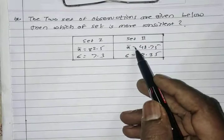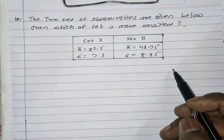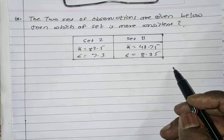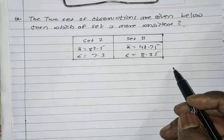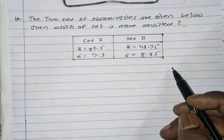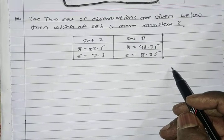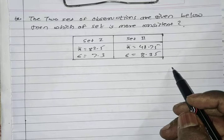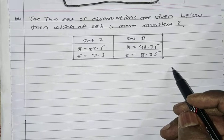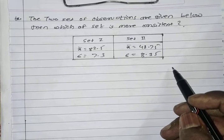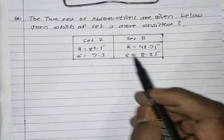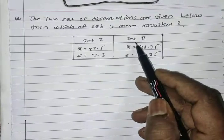We are going to find out consistency. We will use the coefficient of variance. Depending on the coefficient of variance, we will decide which set — Set 1 or Set 2 — is more consistent.